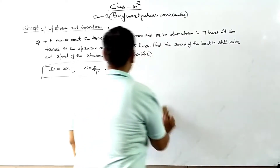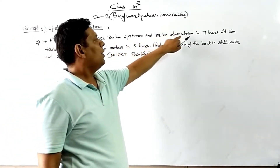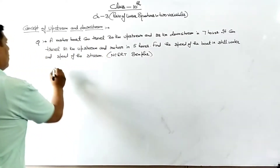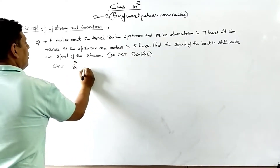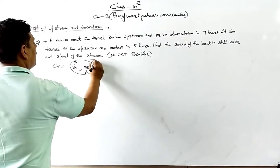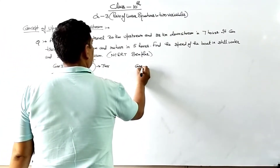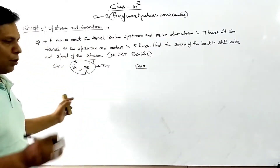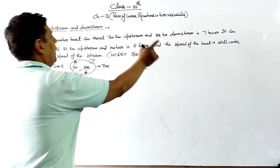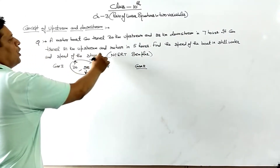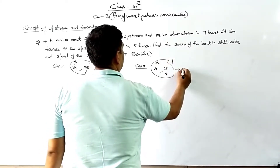The question says: a boat goes 30 km upstream and 28 km downstream and total time is 7 hours — that is Case 1. In Case 2, it can travel 21 km upstream and 21 km downstream and total time is 5 hours. You can read roughly to understand the problem and make it geometrically clear in mind.